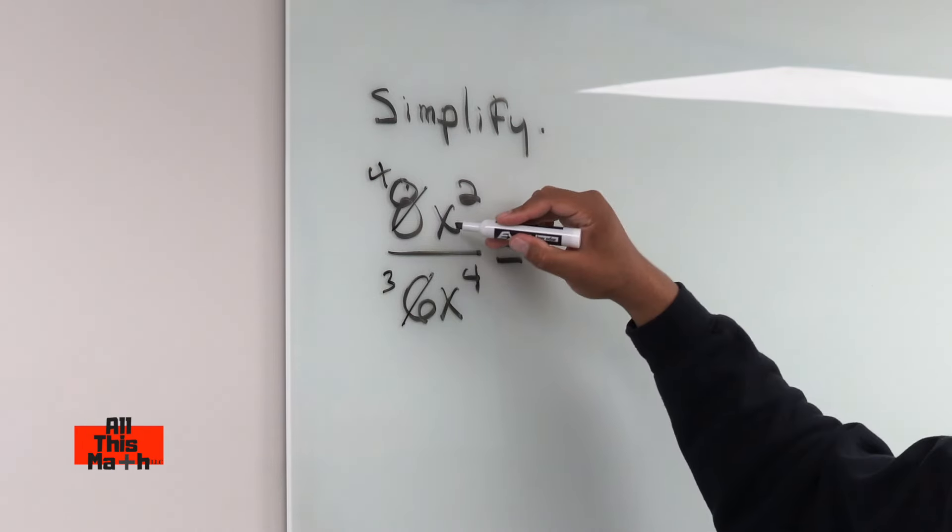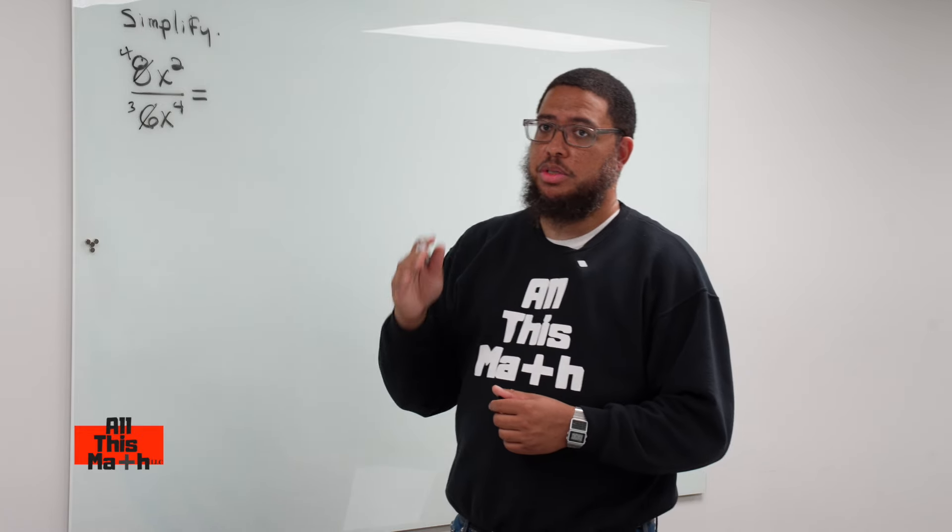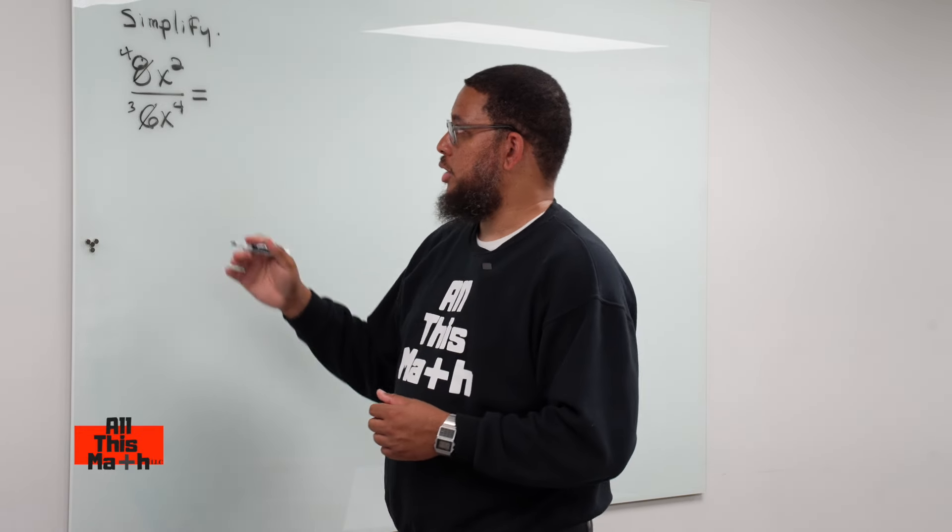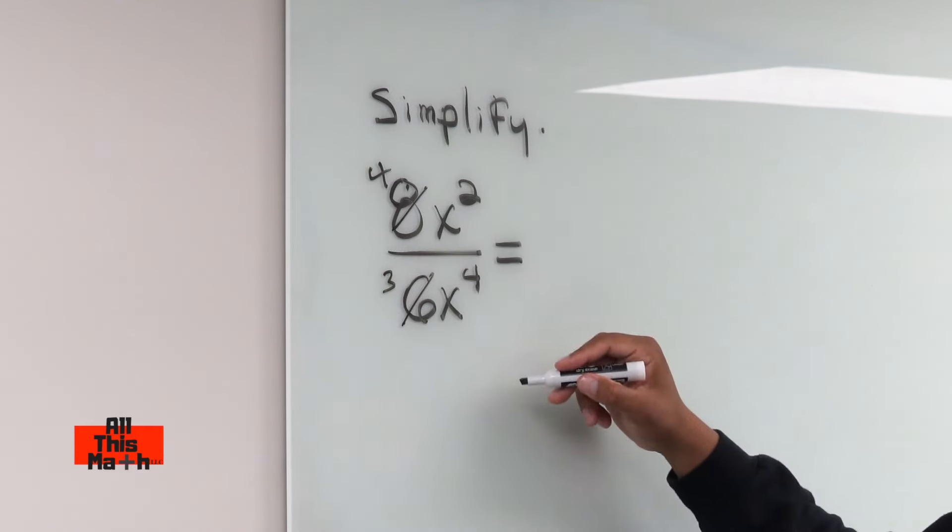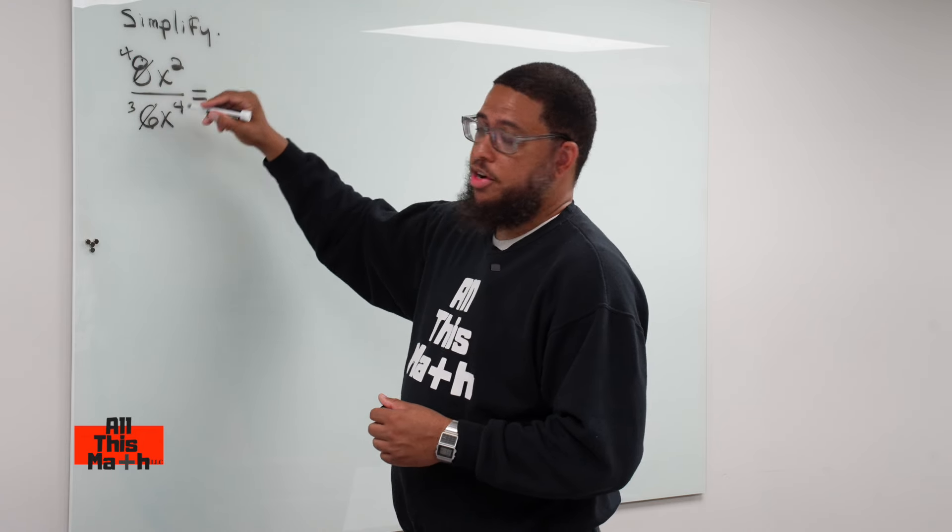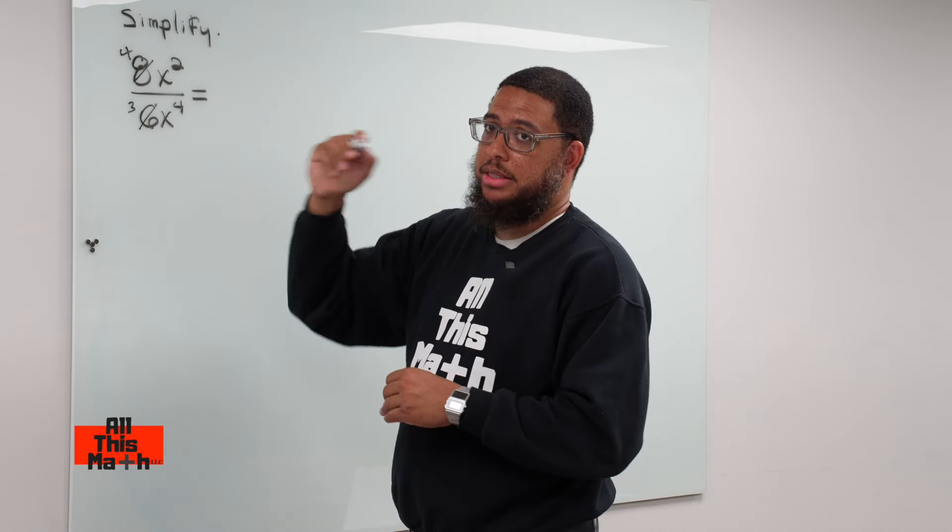Now, we have this x squared and this x to the 4th. So there's a property that we're going to use called the division property of exponents, which says this. When we have the same variable or term or number, we write that variable or term or number one time in the numerator, and then we subtract the exponents.